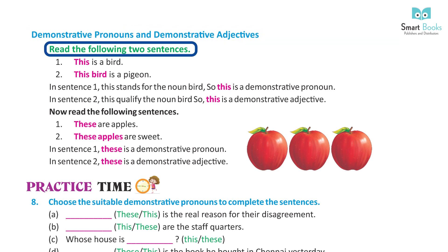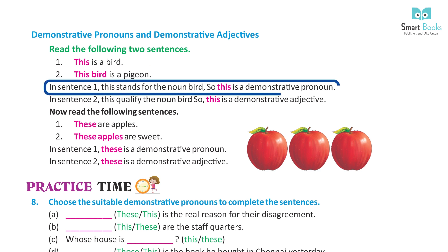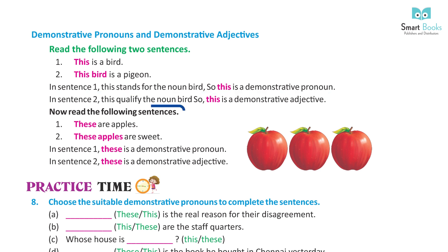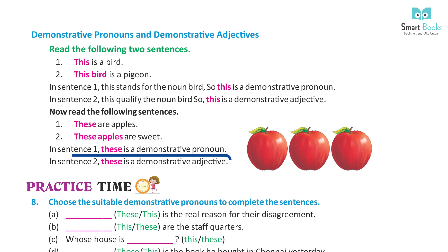Demonstrative pronouns vs. demonstrative adjectives. Sentence one: this is a bird — here 'this' stands for the noun bird, so it is a demonstrative pronoun. Sentence two: this bird is a pigeon — here 'this' qualifies the noun bird, so it is a demonstrative adjective. Similarly: these are apples — 'these' is a demonstrative pronoun. These apples are sweet — 'these' is a demonstrative adjective.